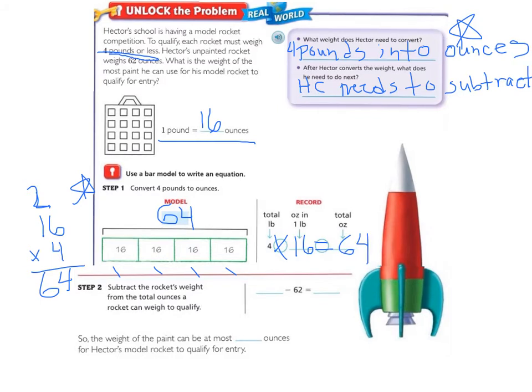Moving down to step 2. We need to subtract the rocket's weight from the total ounces a rocket can weigh to qualify. So we need to take our 64 that we found and subtract. So 64 minus 62 equals 2.